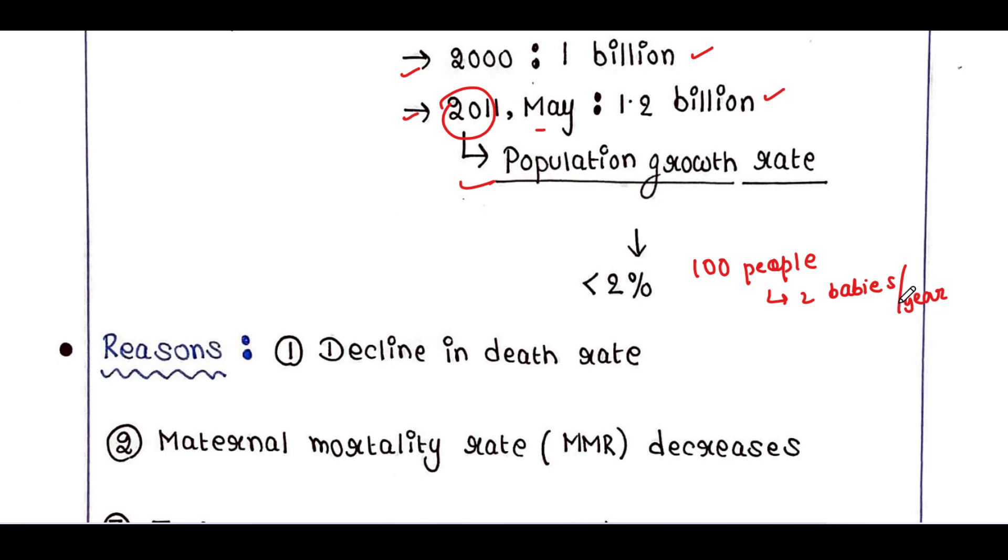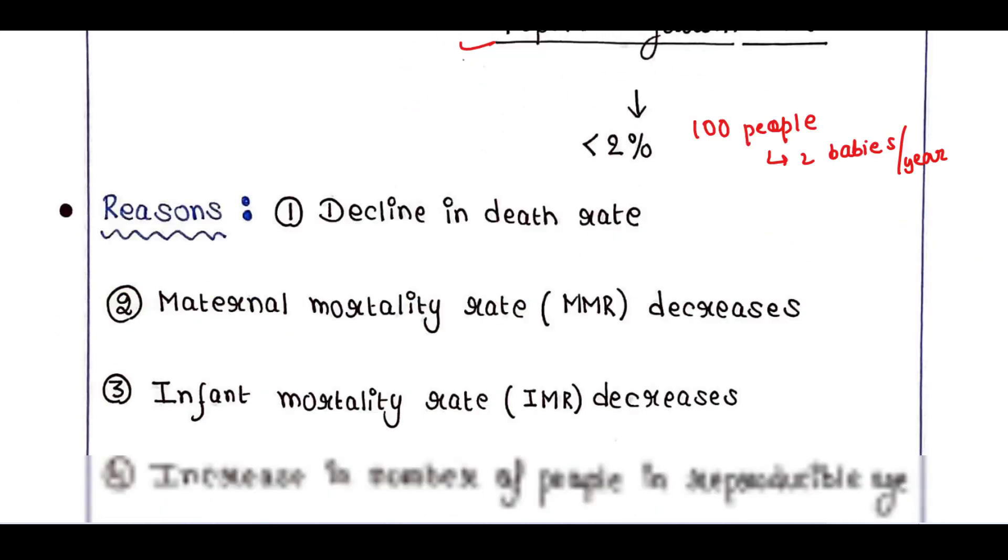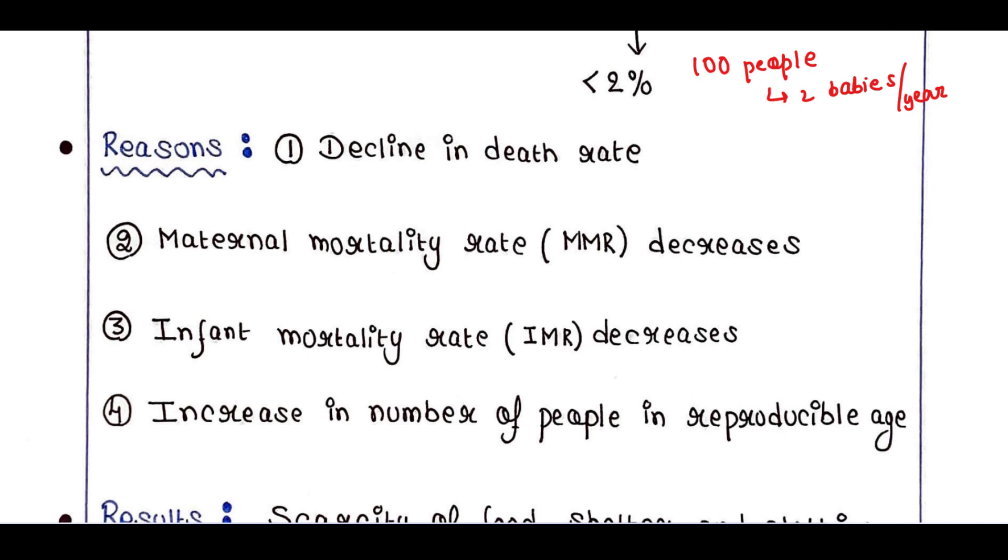So what are the reasons of such a high population growth rate? First, decline in death rate. Then decline in maternal mortality rate MMR. Then decline in infant mortality rate IMR. And the number of people in reproducible age also increased.